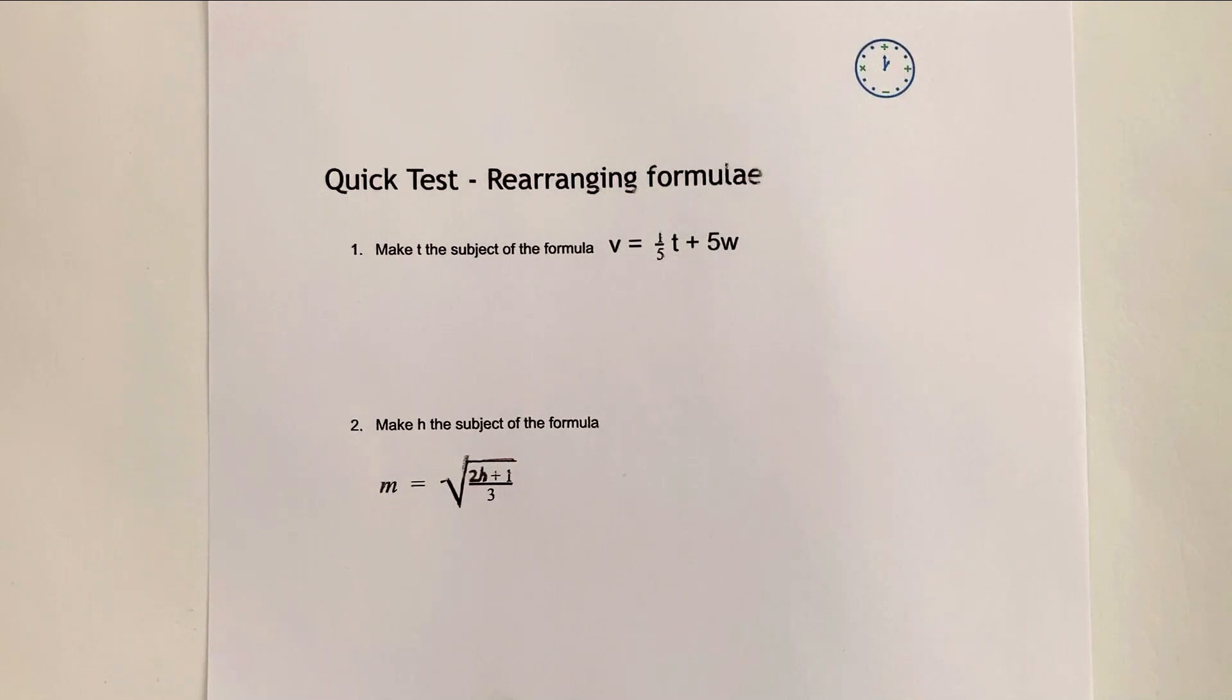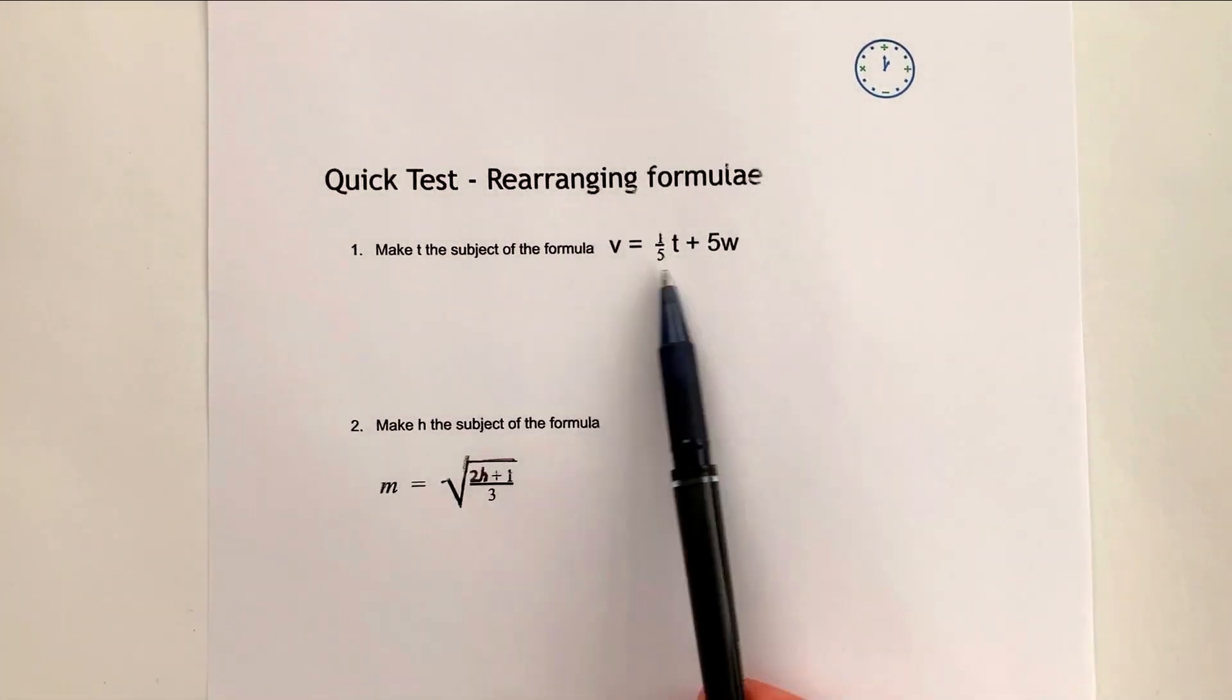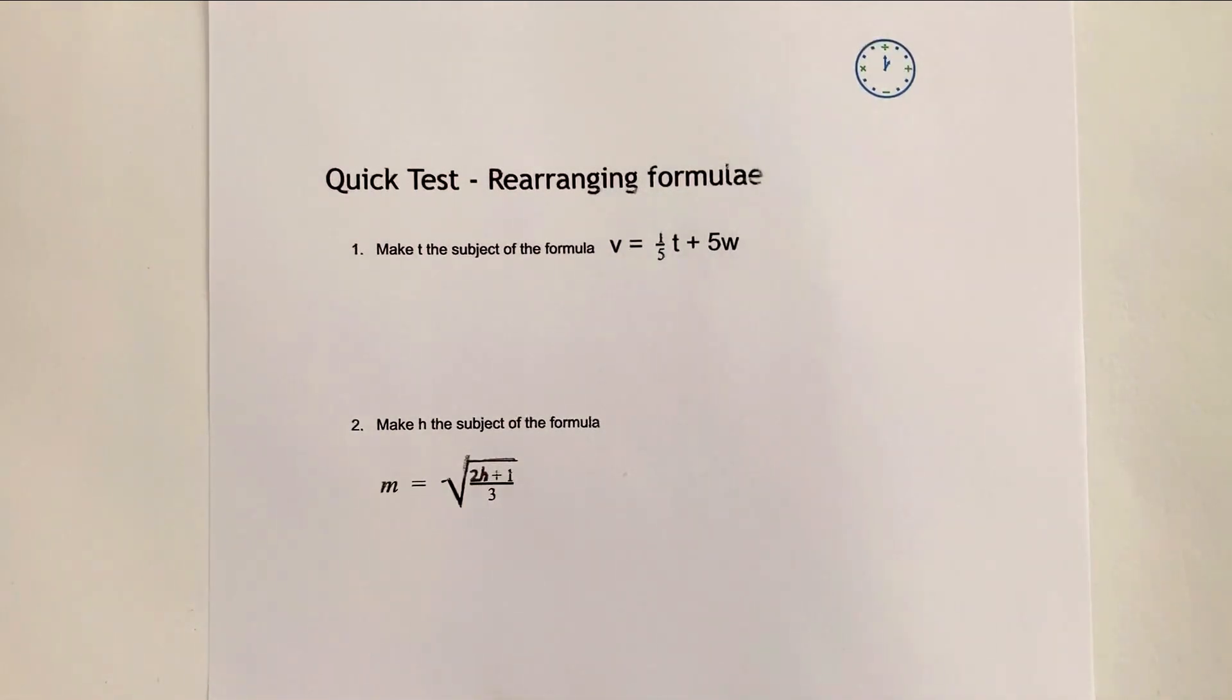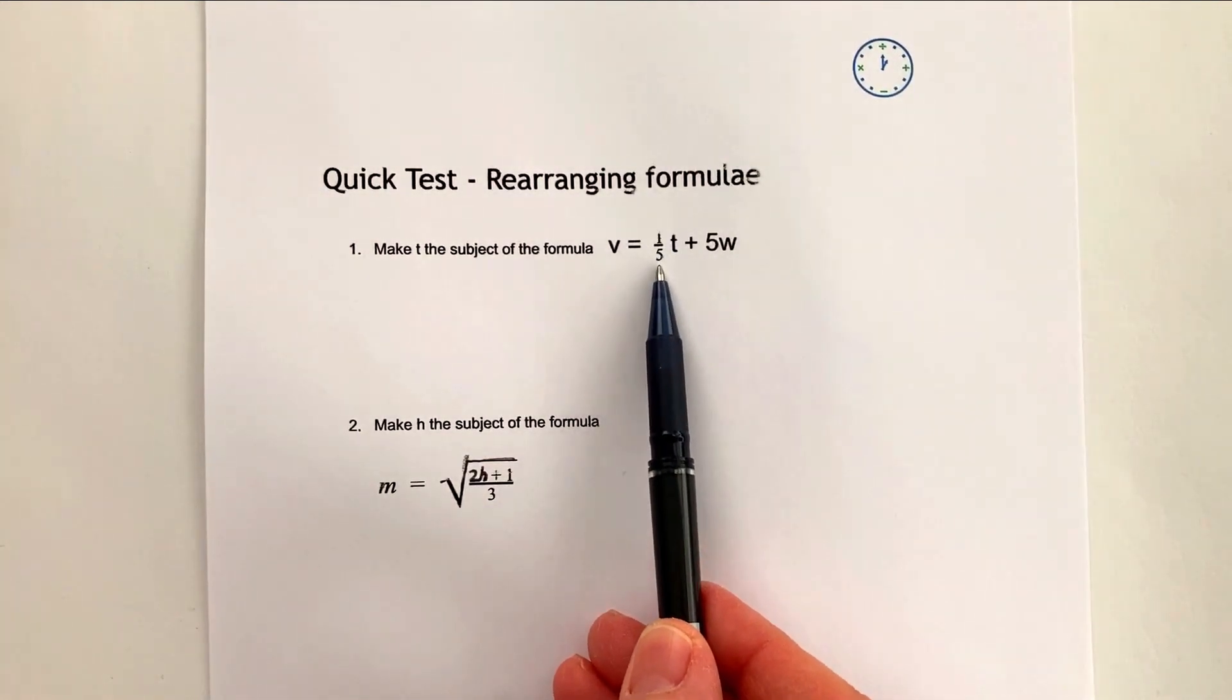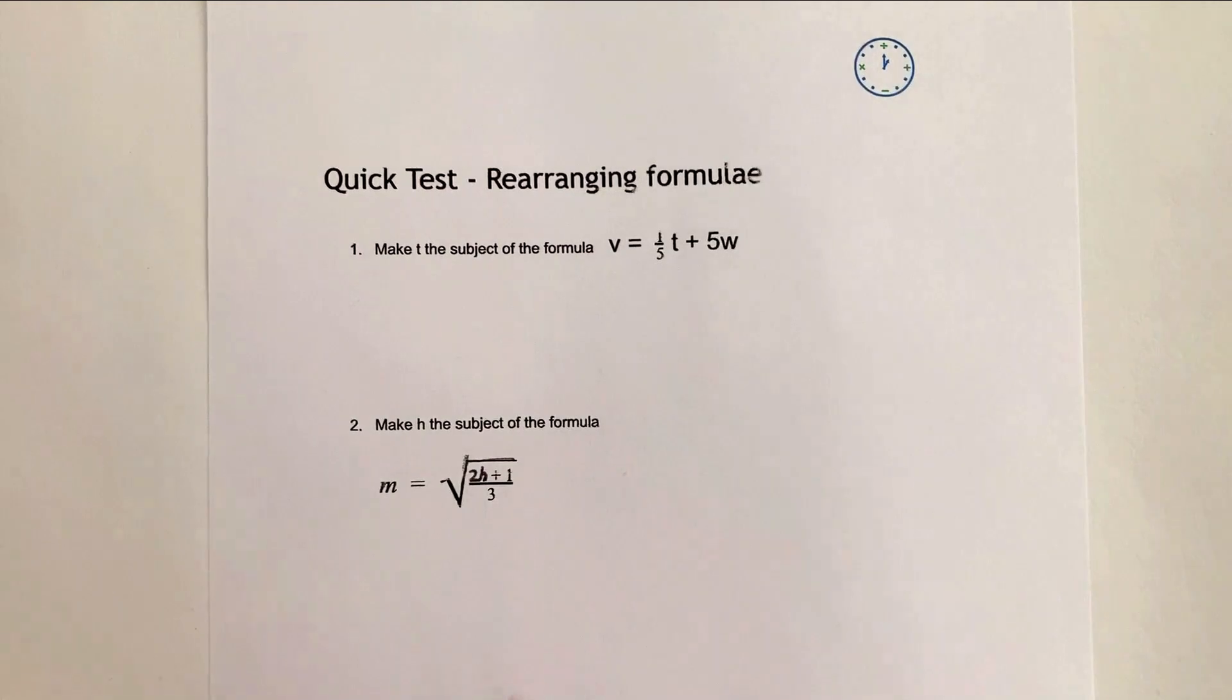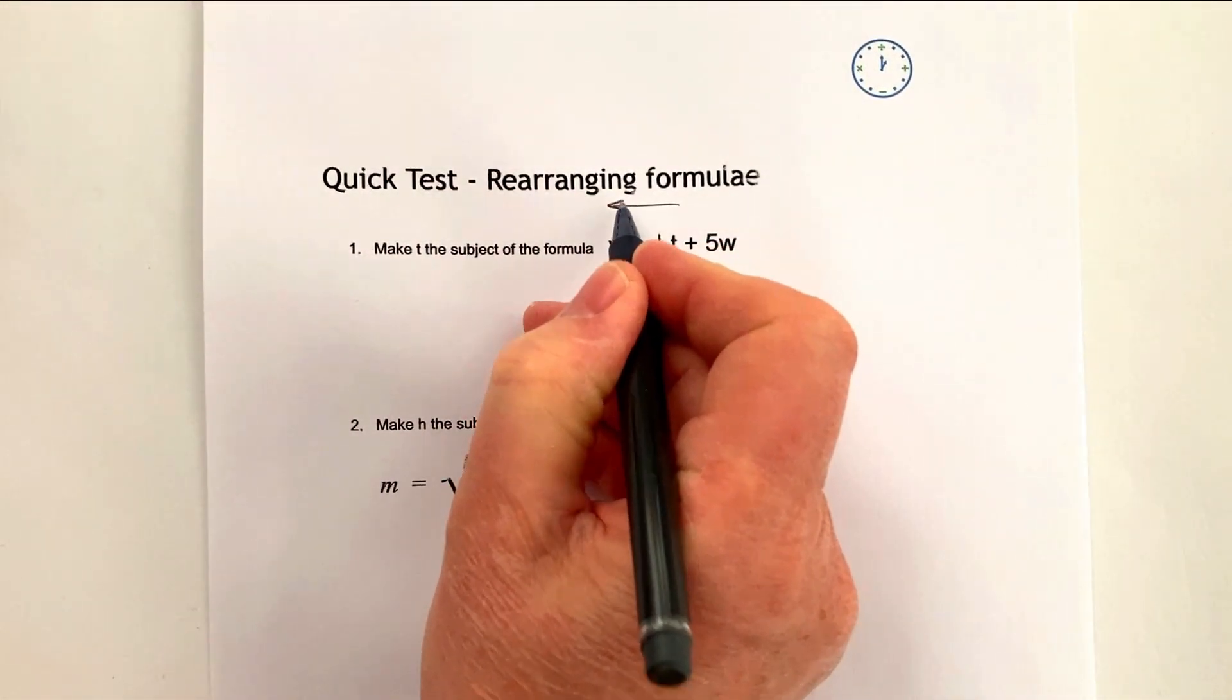Let's have a look at the first one. There's actually three questions in this worksheet and if you follow the link below you'll be able to download it. Make t the subject of the formula v equals a fifth of t plus five w. Well immediately, you've got this problem that this is going to be a fifth of t. But with a lot of these types of questions it's far better to leave this as a positive value. I know we're very comfortable reading left to right but actually sometimes within algebra it's better to leave it as positive and be reading this as right to left.